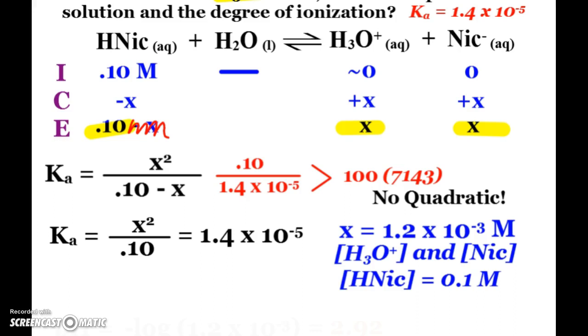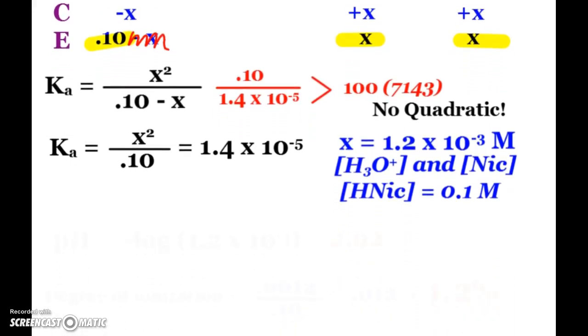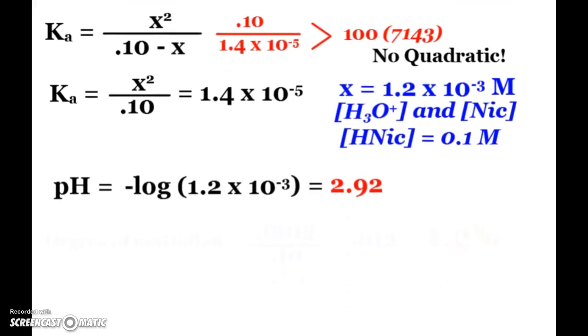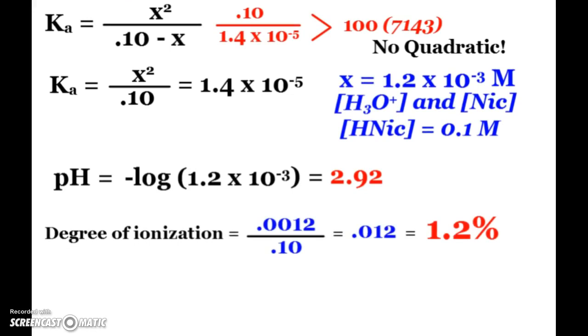We also wanted to know the pH and the degree of ionization. Well, since we know hydronium, pH is simply going to be the negative log of that, 2.92. We expect that. It's an acid, so I do expect an answer lower than 7. Degree of ionization again is just the original concentration on the bottom, X on the top. So 1.2 times 10 to the negative third or 0.0012. And so my degree of ionization is 0.012 or as a percent, 1.2%.